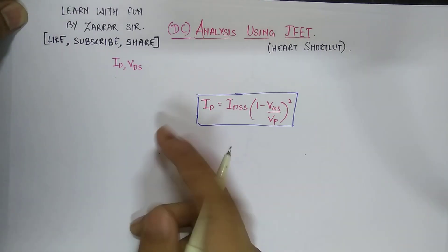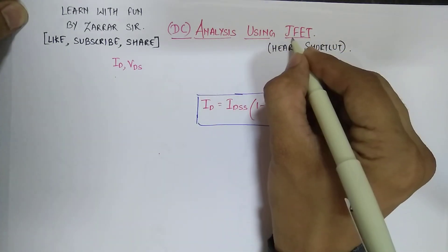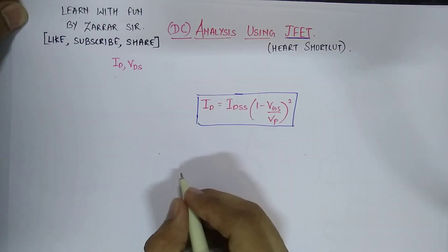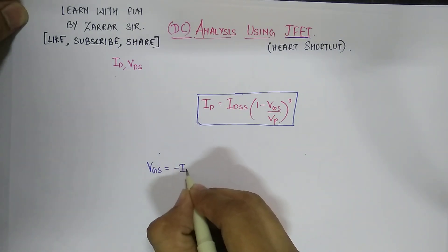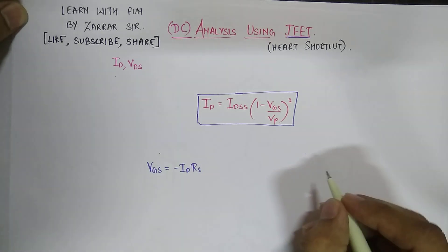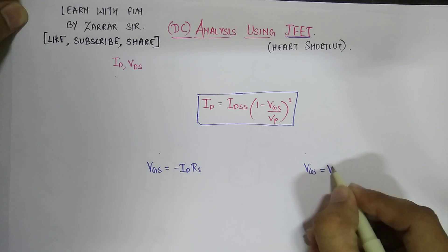Do remember there are two types of biasing in FET: one is self bias and another is voltage divider bias. For self bias, VGS equals minus ID times RS, and for voltage divider bias, VGS equals